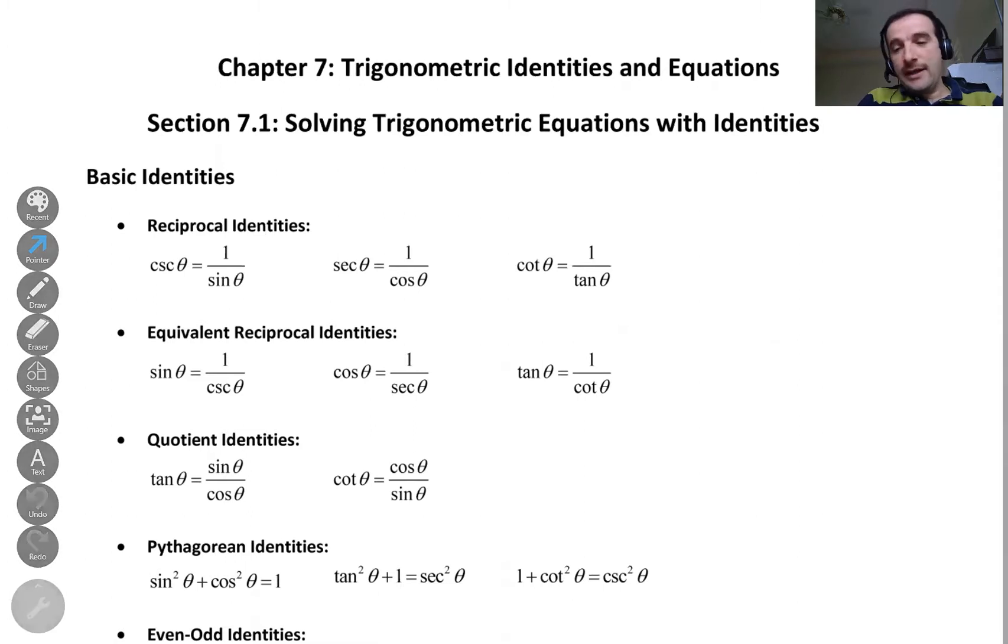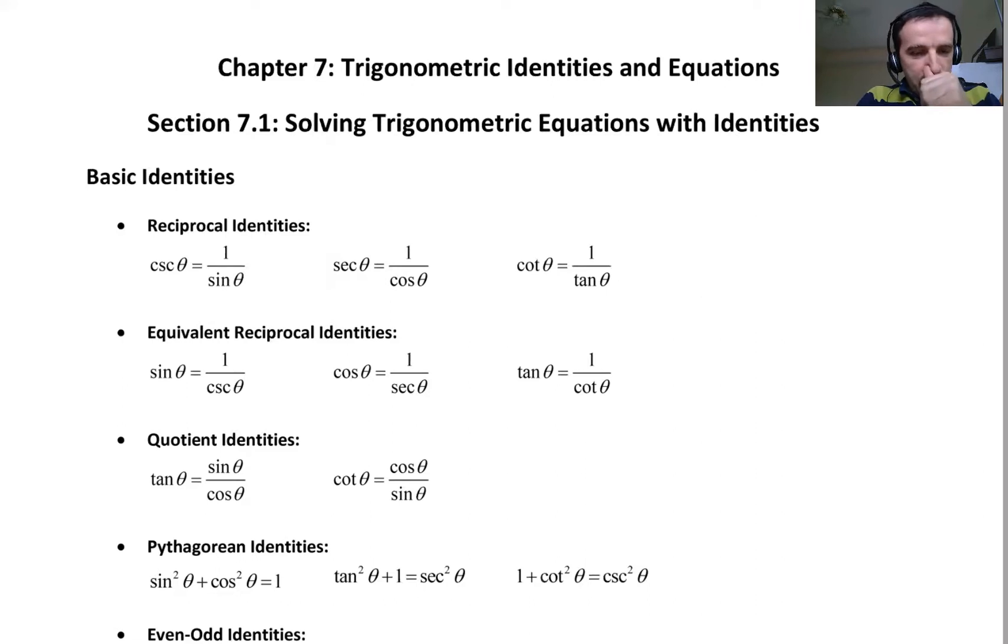As I said, this chapter 7 will be about trigonometric identities and equations. And at the beginning, we are going to start with section 7.1. And 7.1 is about solving trigonometric equations with identities. And we have seen the identities already before, right? You should remember all these identities. But I'm going to remind all of them actually today in this part. So first of all, what are the reciprocal identities?